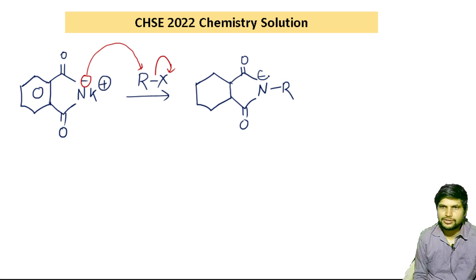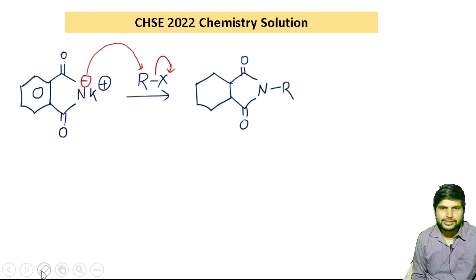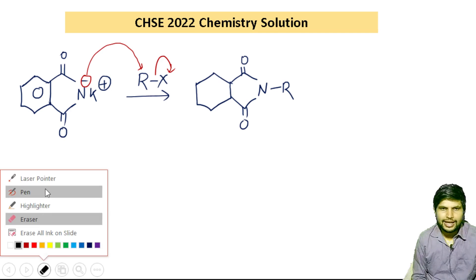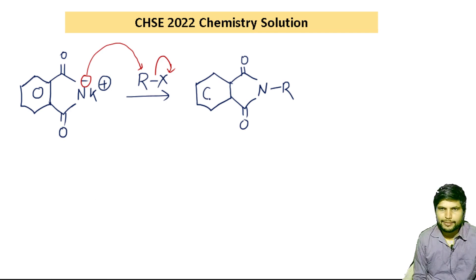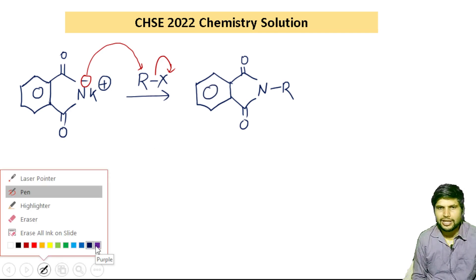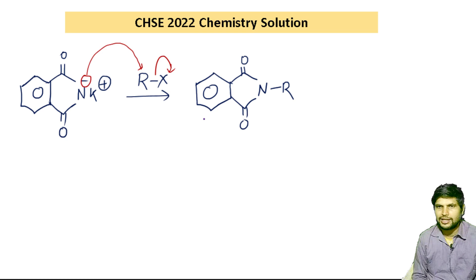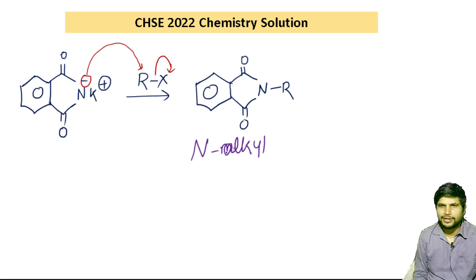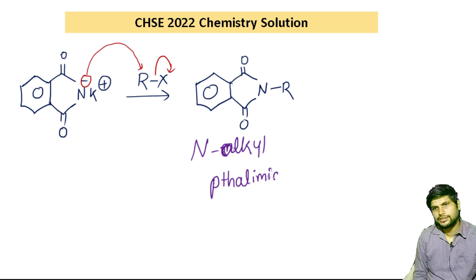This is N-alkyl phthalimide — N bond R. If R is methyl, we get N-methyl; if R is ethyl, we get N-ethyl. So it is N-alkyl phthalimide.